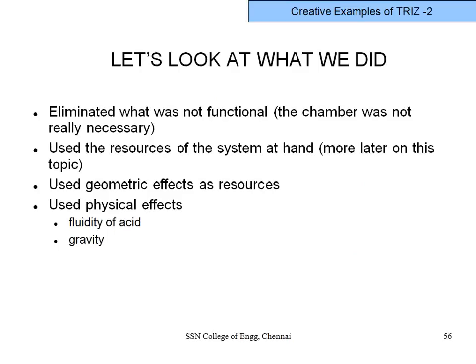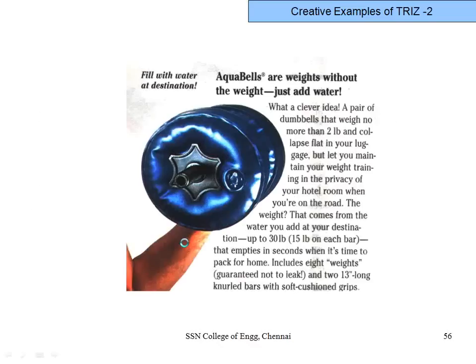Another interesting example: a dumbbell is heavy to carry while traveling but you need the weight when exercising. Separating in space — while carrying you don't require the weight, but during exercise you do. The solution: make the dumbbell like a balloon with a provision to fill with water. It travels as an empty cavity, lightweight. When you want to use it in the hotel room, fill it with water to get the necessary weight.